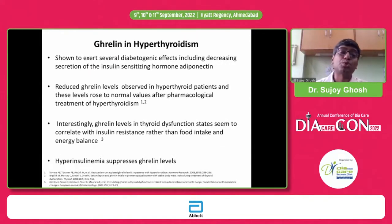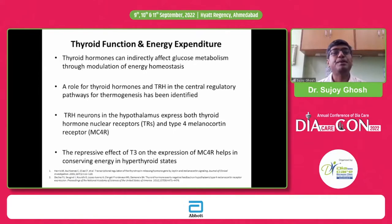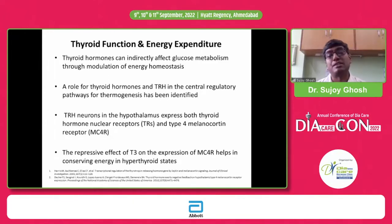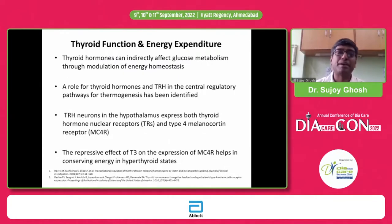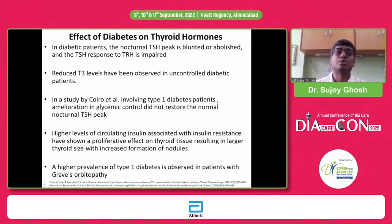Ghrelin — the hormone through which growth hormone works — also seems to be altered in patients with hyperthyroidism. The thyroid hormone is essentially required to maintain your basal metabolic rate. When thyroid hormone levels are increased, the basal metabolic rate changes and that will shift the body from energy conservation to energy expenditure, leading to excess glucose levels.